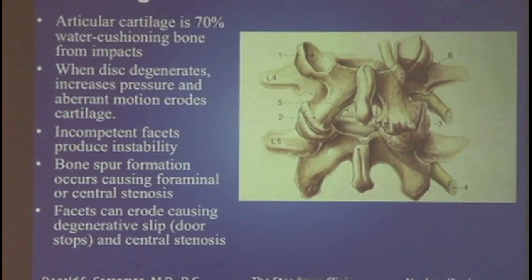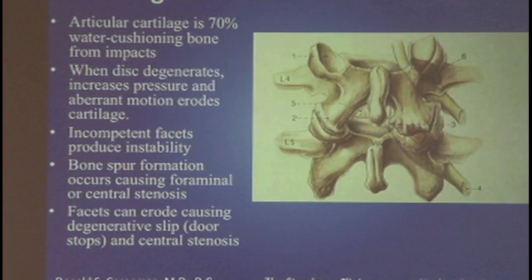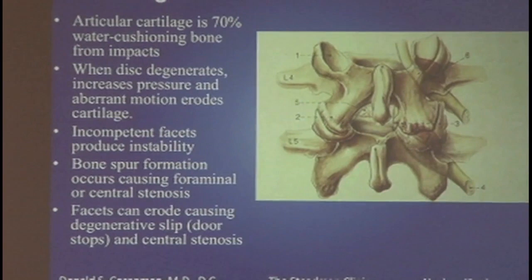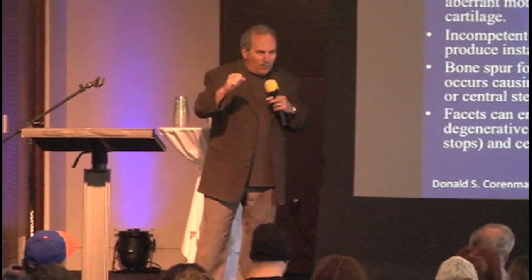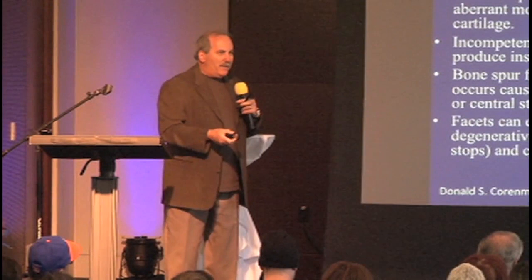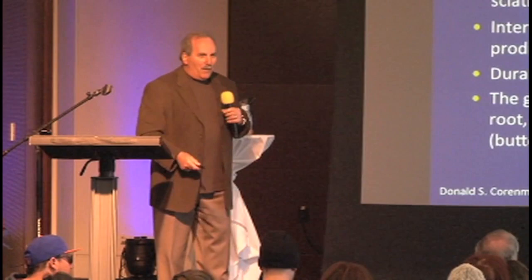The facets can erode — they're the doorstops, meaning one vertebra above hooks into the back of the vertebra below. If you wear that doorstop out, that vertebra is going to start to slide forward. So now we're starting to put together what can happen to the spine, and you can start to think of how you can reverse this.